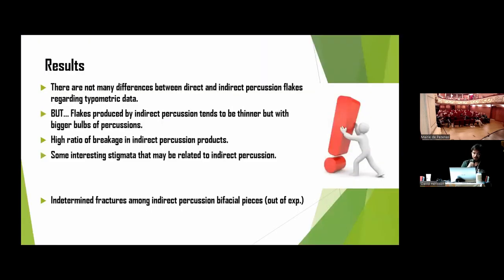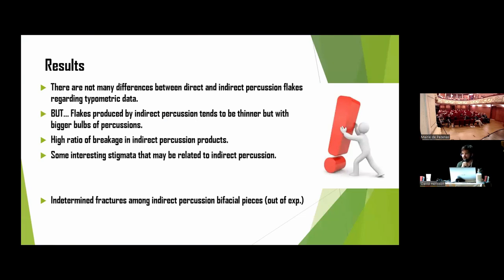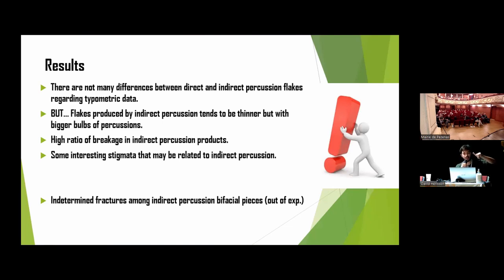The main results: when we measured everything and analyzed the data, first of all there are no differences between direct and indirect percussion flakes regarding typometric data. I want to point out I am using typometry and not morphology of the flakes, because the morphology seems to be completely the same. With indirect percussion we can get the same types of typical bifacial reduction flakes as with direct percussion. Regarding typometric data, we don't see many differences, but flakes produced by indirect percussion tend to be thinner but with bigger bulbs of percussion.